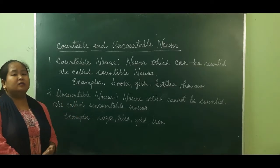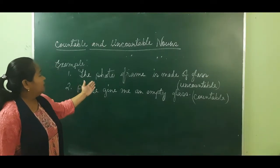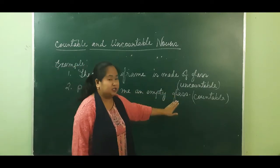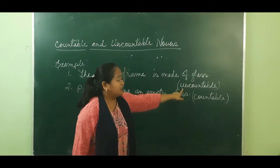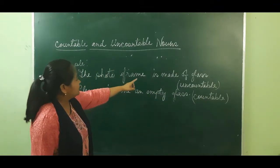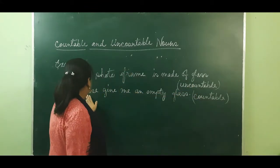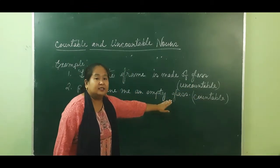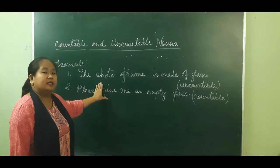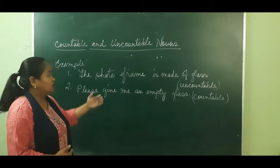There are some nouns which can be both countable and uncountable. For example: 'The photo frame is made of glass' — here glass is a material noun, so it is an uncountable noun. 'Please give me an empty glass' — here glass is a common noun, so it is a countable noun. There are some nouns that can be both countable and uncountable depending on the context of the sentence.